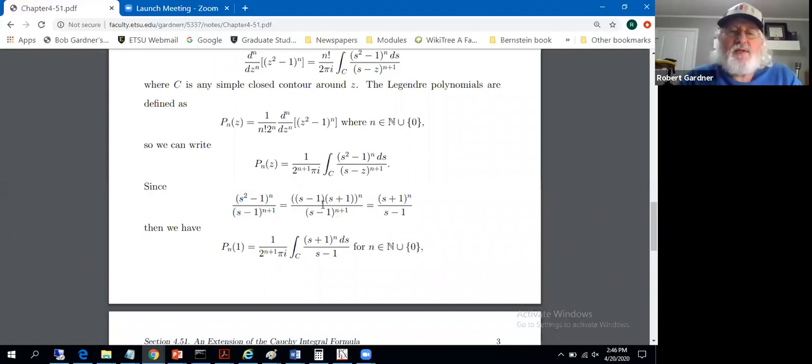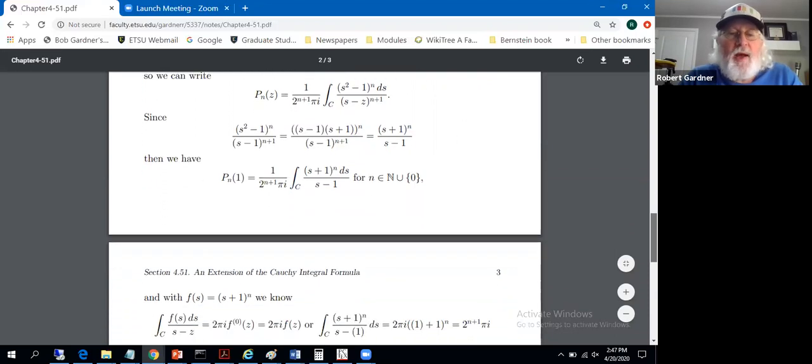s squared minus 1, that's s minus 1 times s plus 1. So we can factor that. Now we've got an s minus 1 to the nth power in the numerator. We've got an s minus 1 to the n plus 1st power in the denominator. So we can cancel all but one of those, leaving us with s plus 1 to the n over s minus 1. Meaning we can take this integral and when z equals 1, rewrite it as an integral of this quantity. That's exactly what we have here. So we've replaced the integral of this function with the integral of that function. And in so doing, we've let z equal 1. That's how we were able to factor up here and get things to simplify. So that's why we're considering 1 from a practical point of view as well.